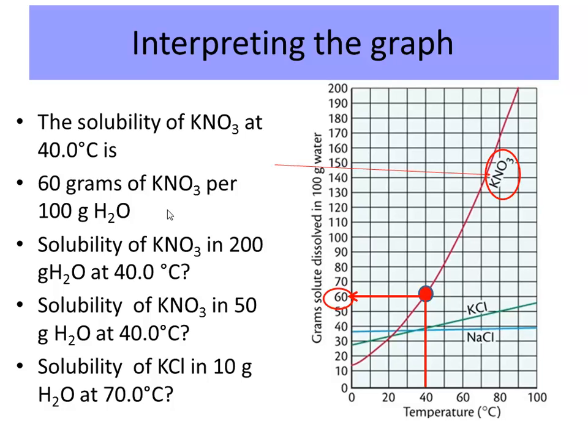Now, if I can fit 60 grams of KNO3 in 100 grams of water, how many grams dissolve in 200 grams of water? It doubles to 120 grams. In 50 grams of water, it's 30 grams. Try to figure out the solubility of KNO3 in 10 grams of water at 70°C.